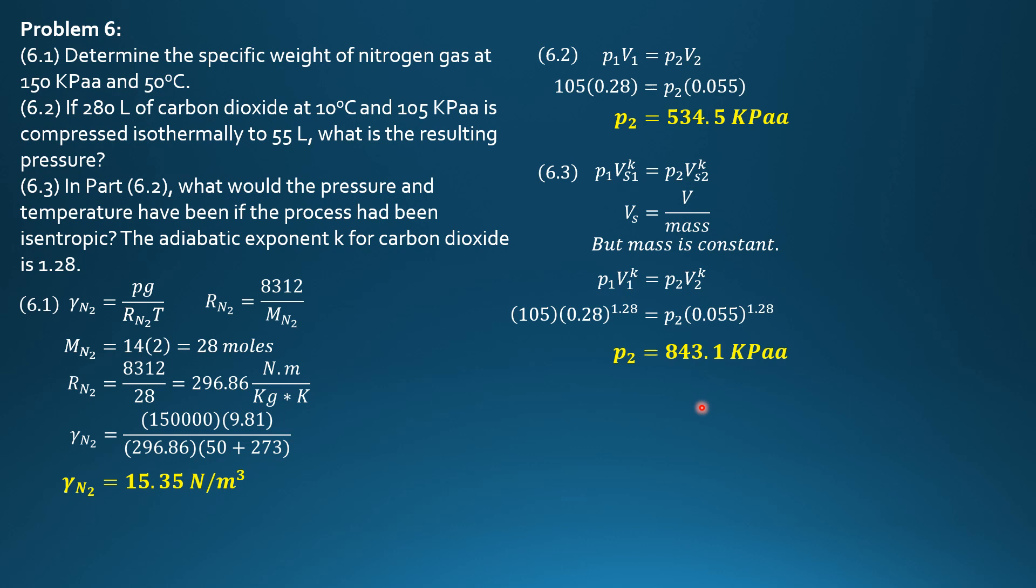Then for the temperature, we have absolute temperature final T2 over absolute temperature initial T1 equals quantity V1 over V2 raised to K minus 1. So supposedly specific volume, but we can reduce this to just volume as explained there.